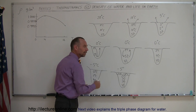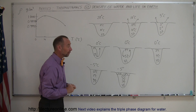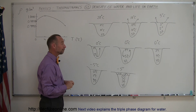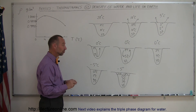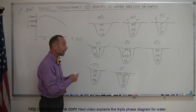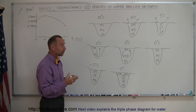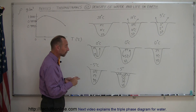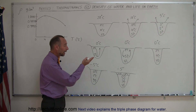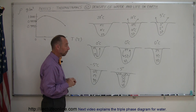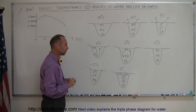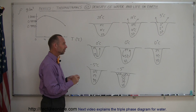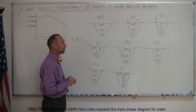The water at the bottom may not be quite exactly 4 degrees centigrade. The same kind of thing happens in the oceans — the water at the very bottom of the oceans tends to be around 4 degrees centigrade and warmer on top, except maybe in the Arctic regions. This is the unique property of water and ice.